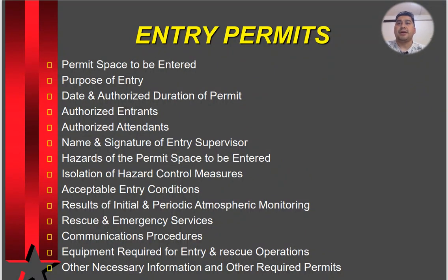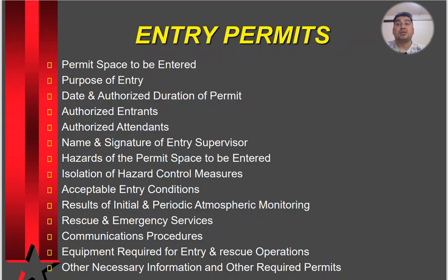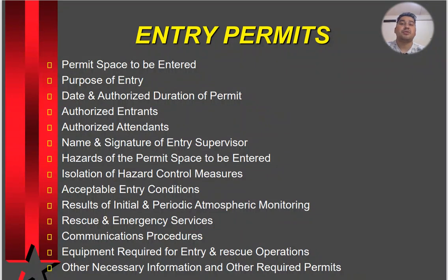What should be inside the entry permit: the permit space to be entered; purpose of entry; date and authorized duration of permit; who are the authorized entrants and how many; authorized attendants outside the confined space; name and signature of entry supervisor; hazards of the permit space; isolation and hazard control measures; acceptable entry conditions; results of initial and periodic atmosphere monitoring; rescue and emergency services available; communication procedures; equipment required for entry and rescue operations; and any other necessary information and required permits.